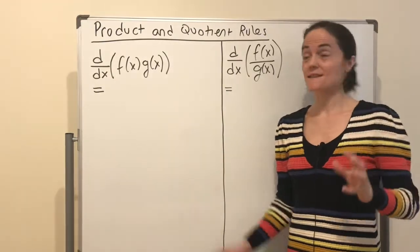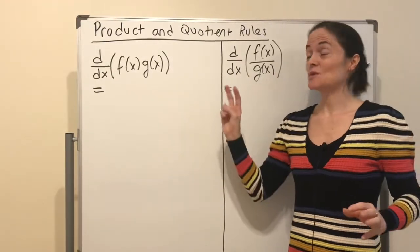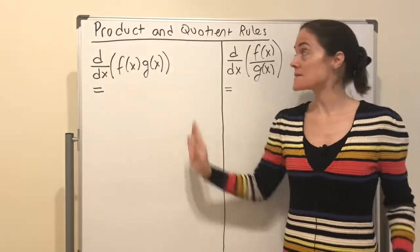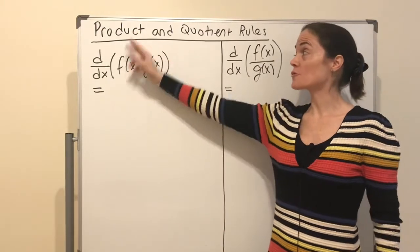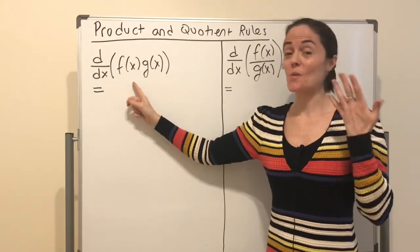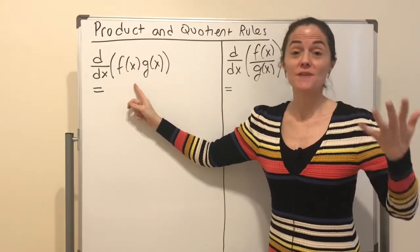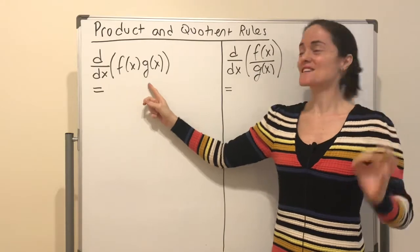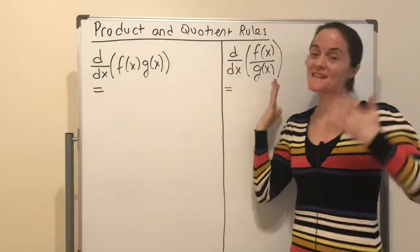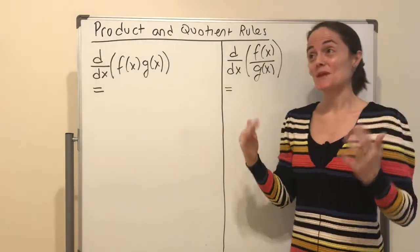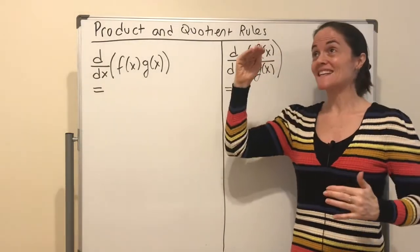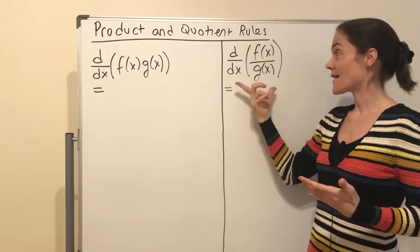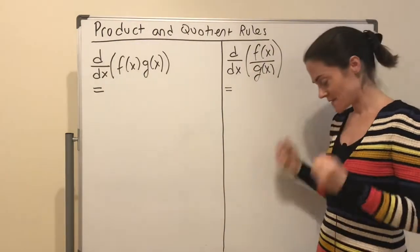Today we discuss two rules for derivatives: the product rule, which is when you want to take the derivative of a product of two functions, and the quotient rule, which is when you have one function divided by another and you would like to find the derivative.